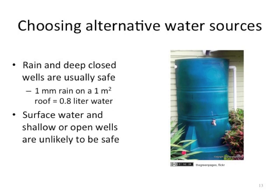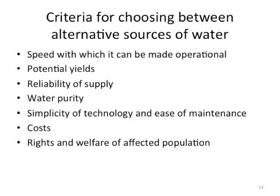Criteria for choosing between alternative water sources include: speed with which it can be made operational, potential yields and reliability of supply, water purity, simplicity of technology and ease of maintenance, appropriateness of technology to the affected communities, costs, and rights and welfare of the affected population.